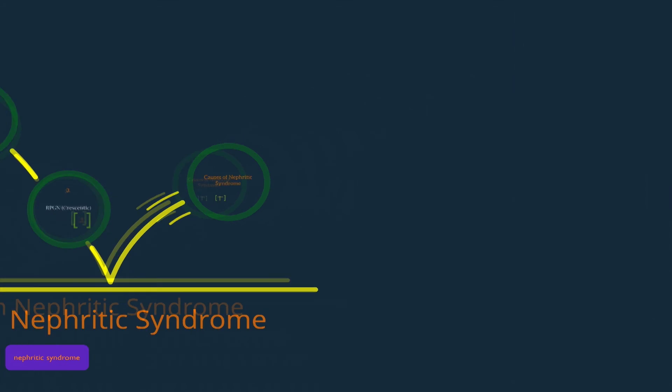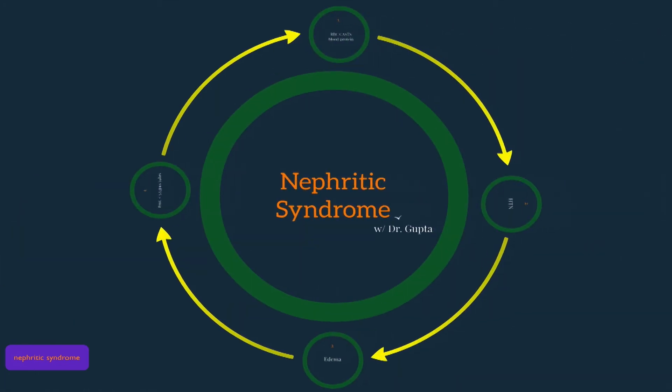In summary, nephritic syndrome is often difficult to diagnose but if categorized in this way can be easily defined into low complement or normal complement. Its cardinal features are red blood cell casts, hypertension, edema, and proteinuria less than 3.5 grams. And that's nephritic syndrome.